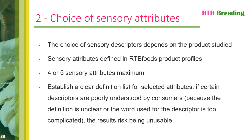Once we have looked at all the sampling conditions, we can move on to the second major point: the choice of sensory attributes to be studied in the consumer test and QDA analysis. The choice of sensory descriptors obviously depends on the product you wish to study. You can use the sensory attributes defined in the RTB food product profiles. You must not exceed a total of 5 sensory attributes. It's important to draw up a clear list of definitions for each sensory attribute selected and that each consumer test investigator knows these definitions and knows how to explain them to consumers. If certain descriptors are misunderstood by consumers — either because the definition is unclear or the word used is too complicated — the results may be unusable.